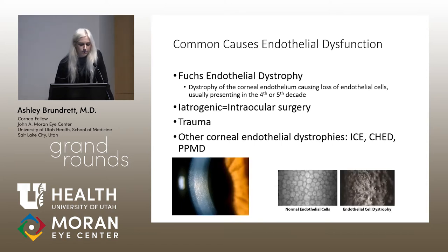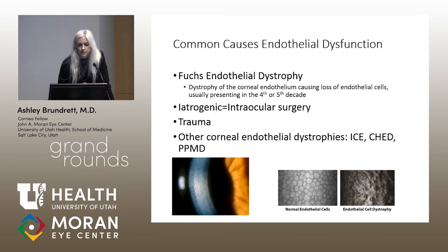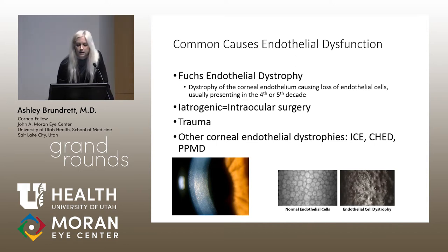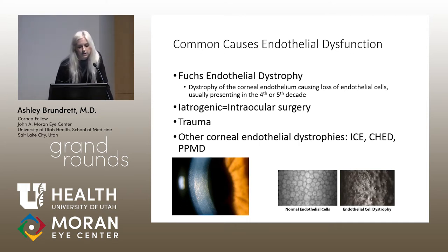Some pictures here: on the bottom left is that beaten bronze appearance of the corneal endothelium you can see at slit lamp. And then a specular microscopy photo showing normal endothelial cells on the left, and on the right, dropout of endothelial cells and loss of morphology — typically what you'll see with endothelial cell dystrophy.